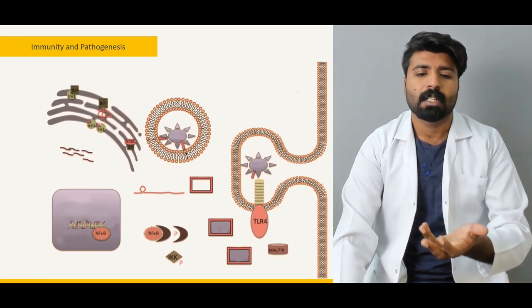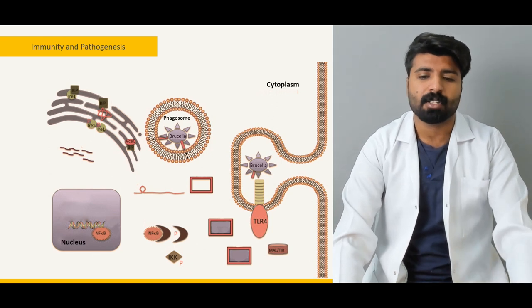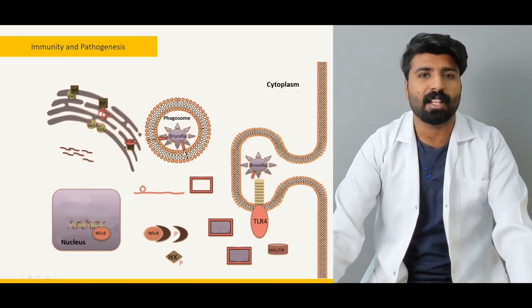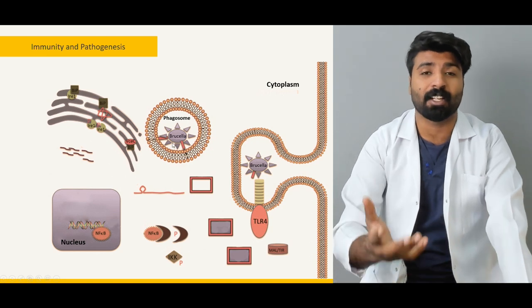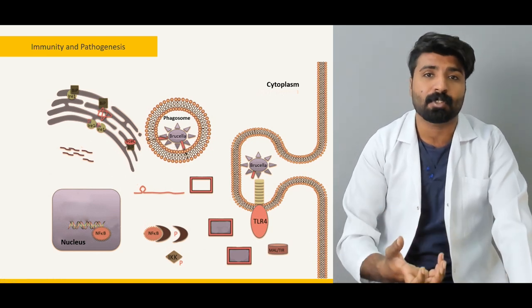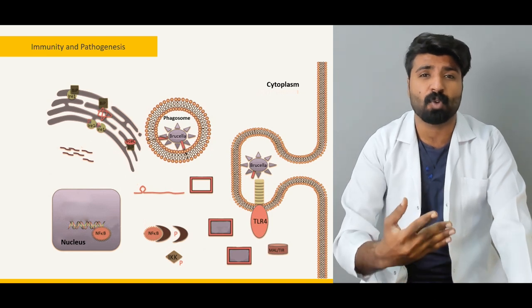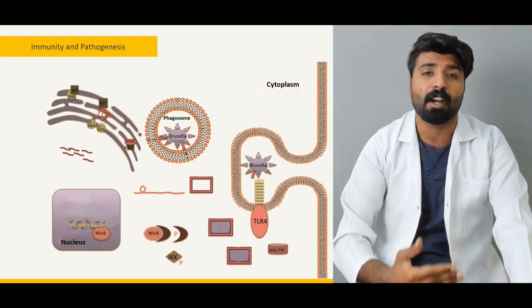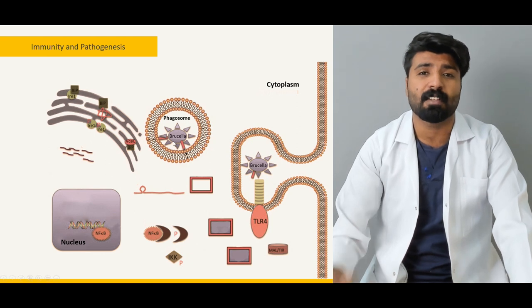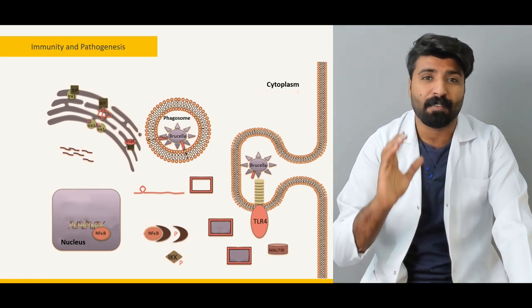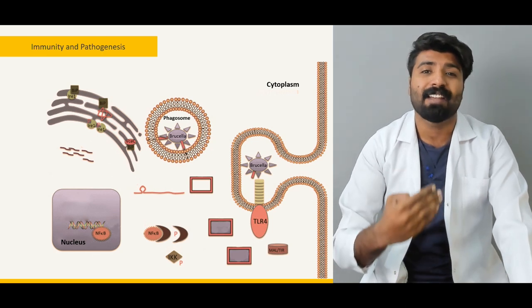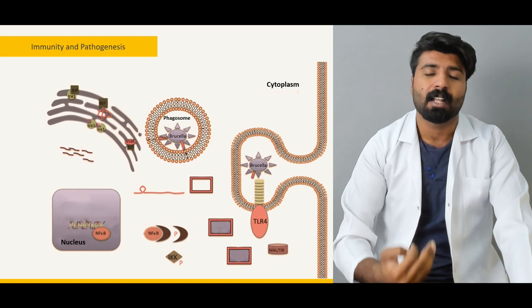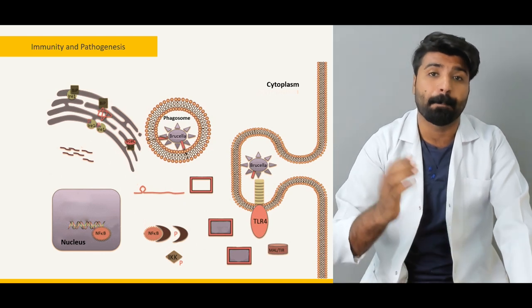A phagosome engulfs a Brucella organism thinking it will kill it. However, Brucella secretes different chemical mediators that compromise the phagosome's killing function. Instead, Brucella inhabits the phagosome, propagates and regenerates there, and when the time is right, bursts through it.